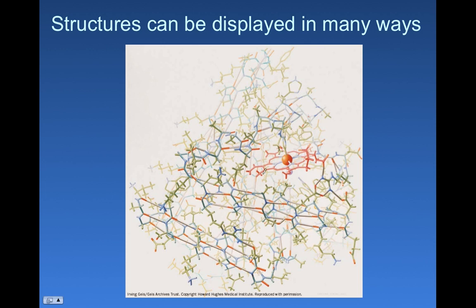Now, you can see something sort of special in this cartoon of myoglobin. And this is a heme group. This is a non-amino acid part of a protein. And it's a good example.